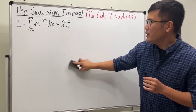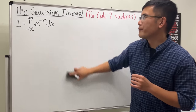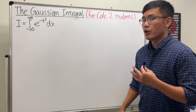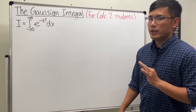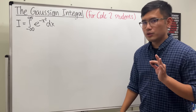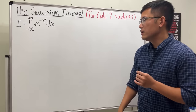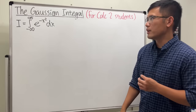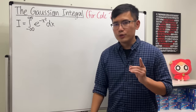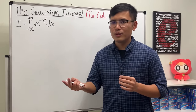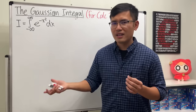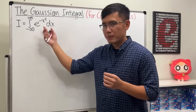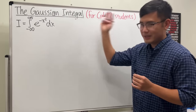The typical way to do this uses the polar coordinate change of variables and the Jacobian. But we are not going to do that — I want to show you an approach that calculus students should be able to understand. We will still end up with a double integral, but it's just like doing an integral inside another integral. You will also need to believe in improper integrals.